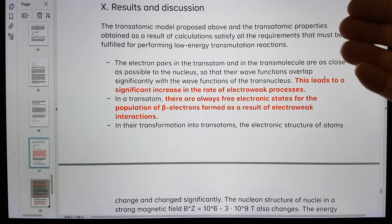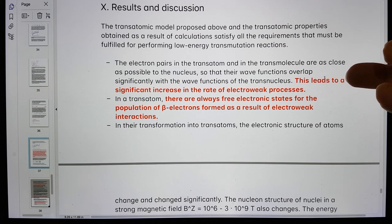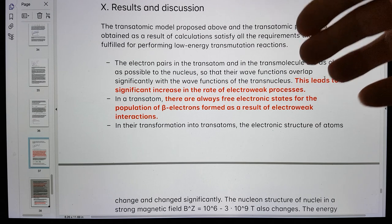His proposal says the electron pairs of the transatom and transmolecule are as close as possible to the nucleus so their wave functions overlap significantly with the wave function of the transnucleus. This leads to a significant increase in the rate of electroweak processes - proton to neutron, neutron to proton, et cetera.